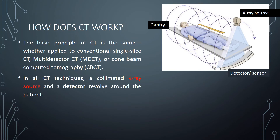So how does the CT machine actually work? The patient lies on a table surface that enters the gantry. A fan-shaped X-ray beam rotates around the patient, along with a detector or sensor that also rotates around the patient, and multiple exposures are made. The basic principle of CT is the same whether applied to conventional single-slice CT, multi-detector CT, or cone beam computed tomography, which is very useful in the maxillofacial region.